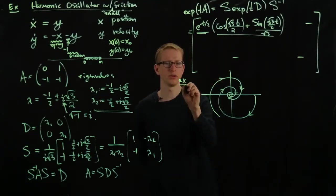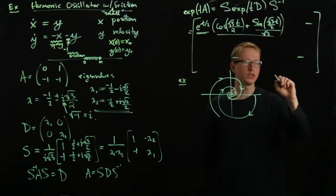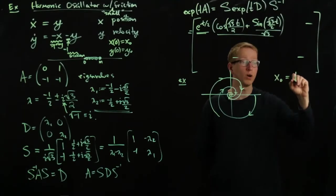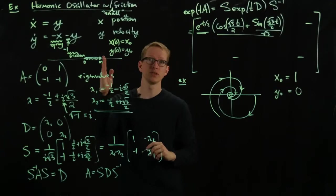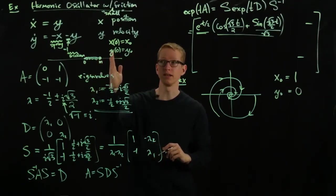So for example, if I started off with the initial condition x0 equals 1 and y0 equals 0, which corresponds to being in a position, for instance, that's to the right here.